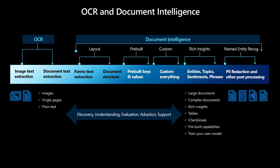Here is the feature-level comparison between OCR and Document Intelligence. With OCR, you can extract text from images, single pages, and plain text documents. But Document Intelligence takes care of the discovery, understanding, evaluation, adoption, and support pipeline. The layout model performs form text extraction, taking into account the document structure. The pre-built models can be applied to specific documents like tax forms, identification documents, invoices, receipts, and many more.